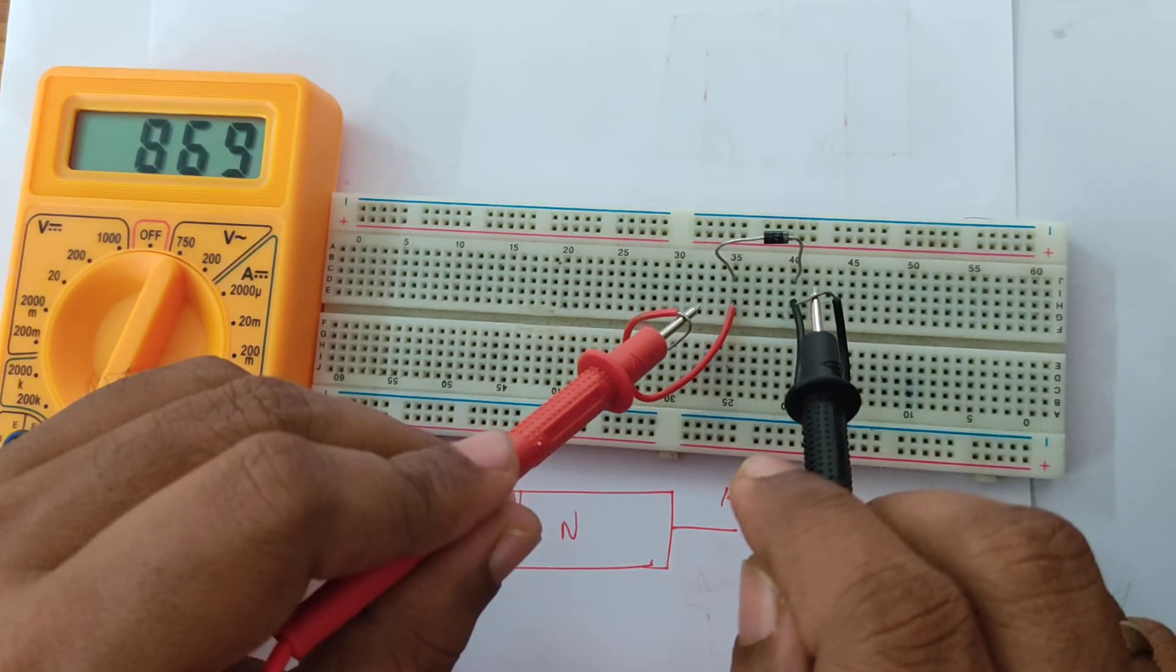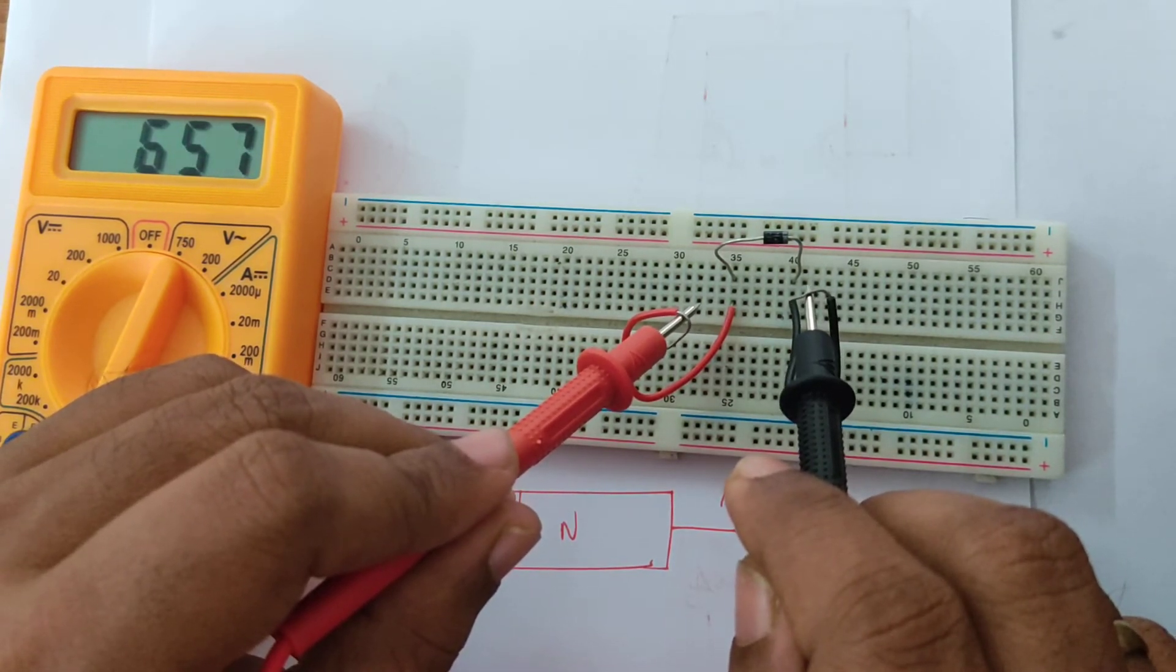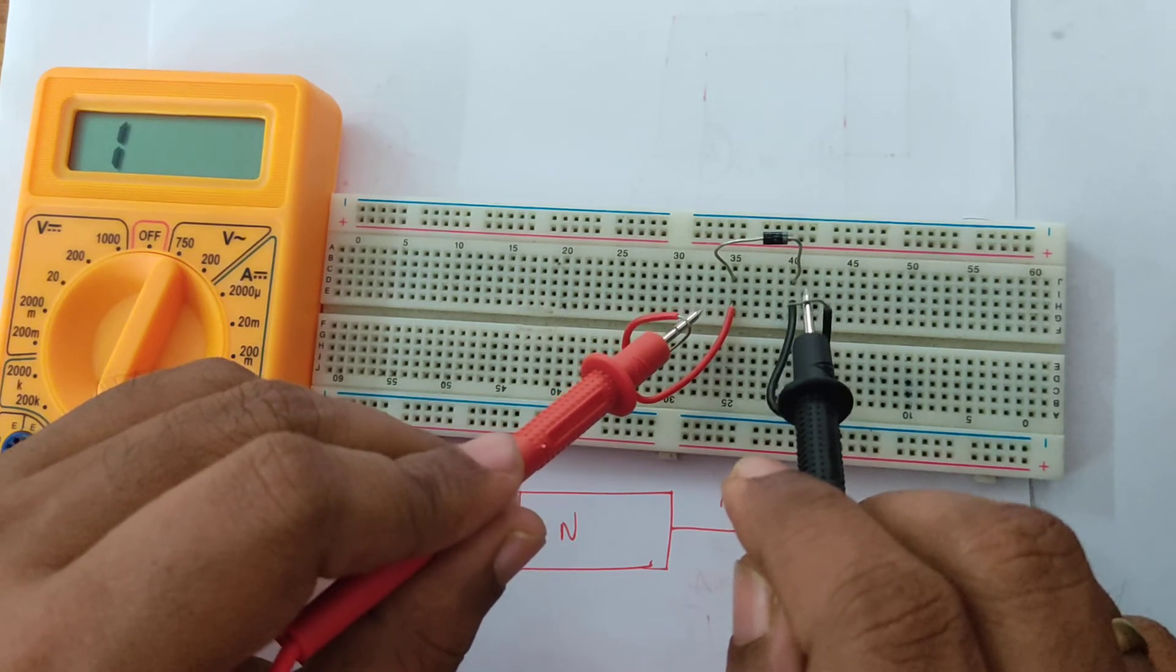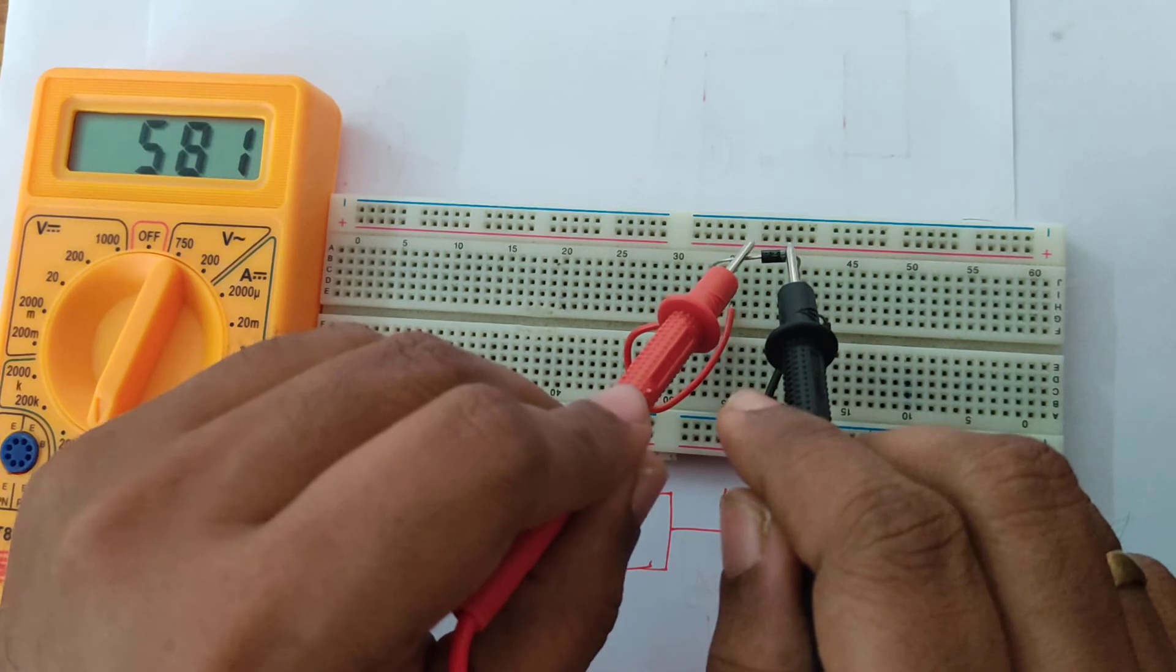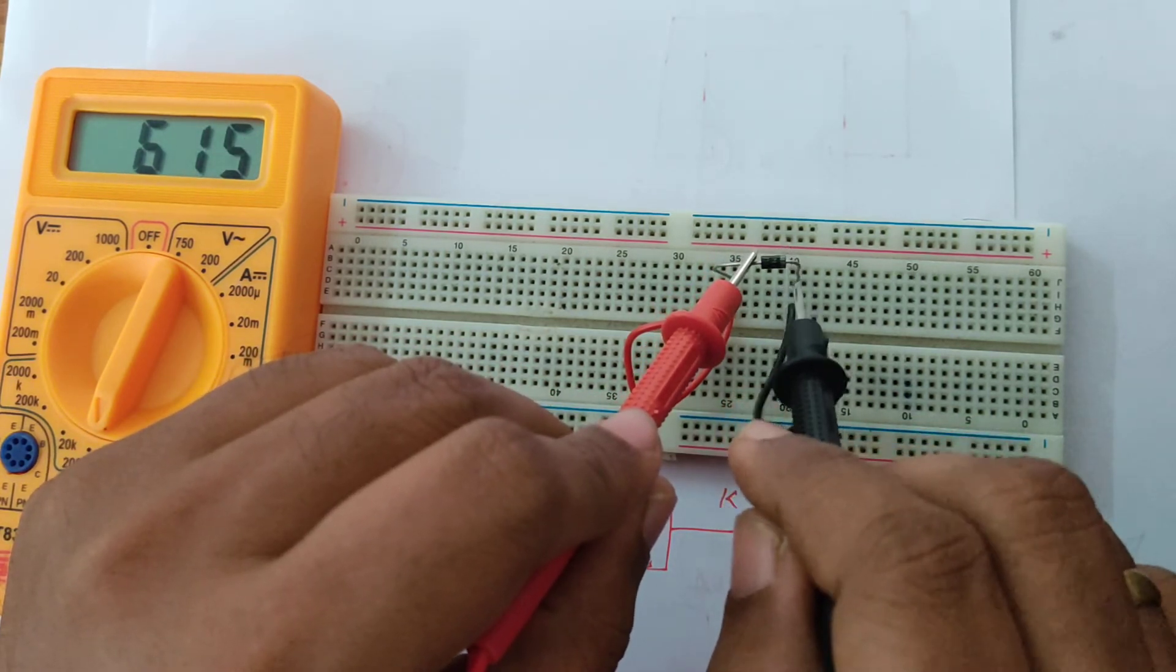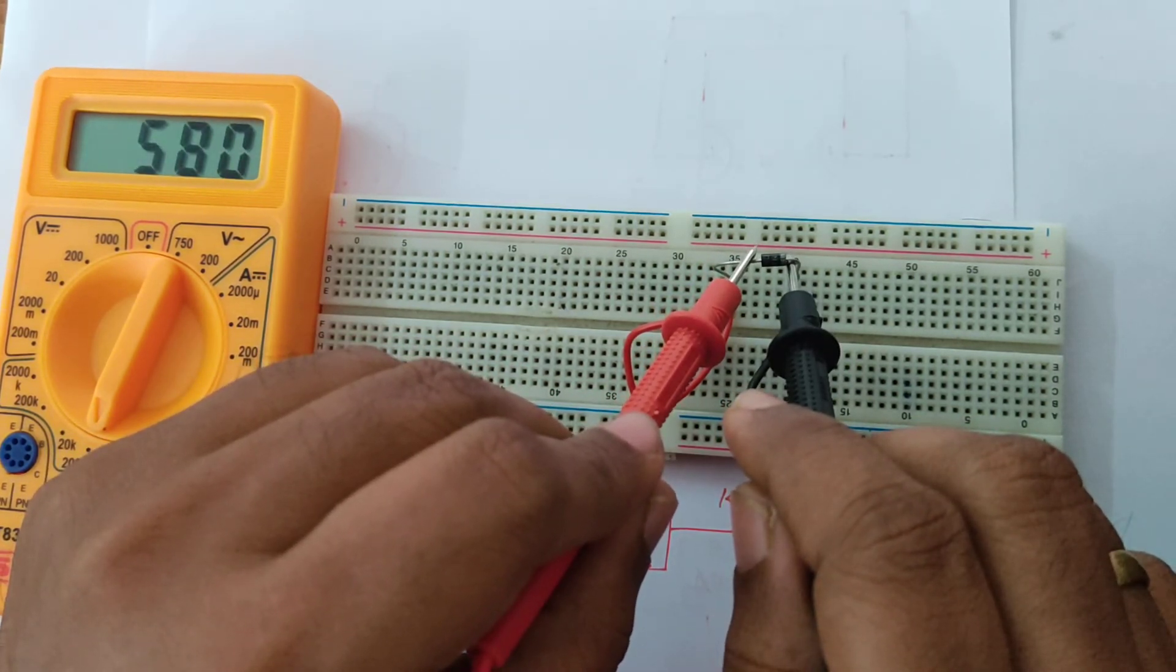So you have a certain resistance flowing in the device. You have a resistance of 580 ohms.